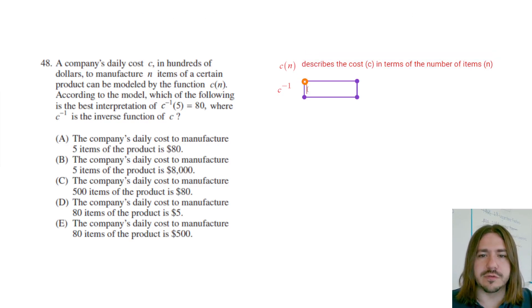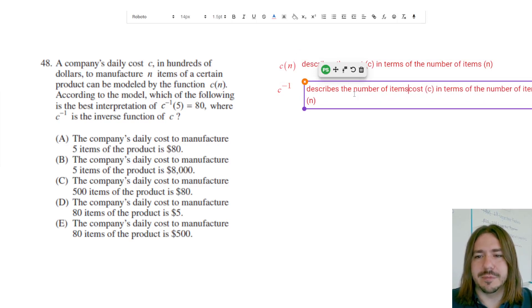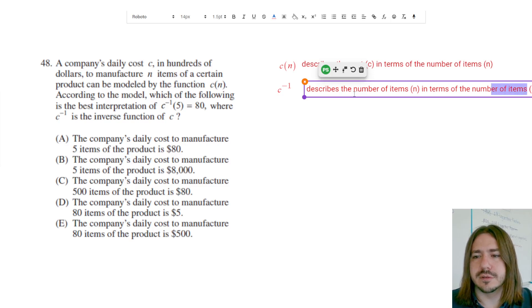So if C of n describes the cost in terms of the number of items, the inverse would describe the number of items, which is n, in terms of the cost. Notice here I just swapped what my input and output was.